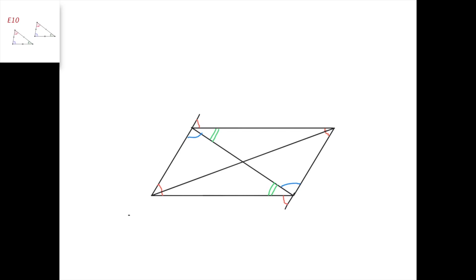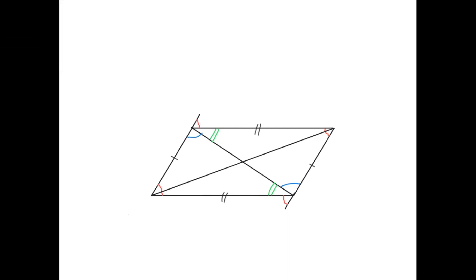Now we can notice that we have congruent triangles. This triangle here is congruent to this triangle here, because they have the same angles — this angle equals this angle, this angle equals this angle, and this angle equals this angle — and they share a side. Because of that, we can mark some equal sides. That means that in a parallelogram, the opposite sides are equal to one another.